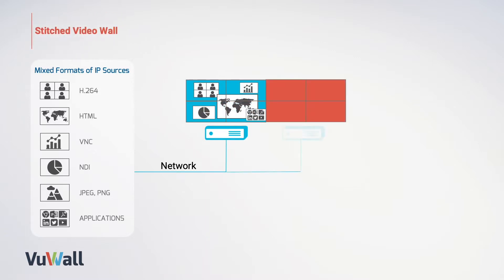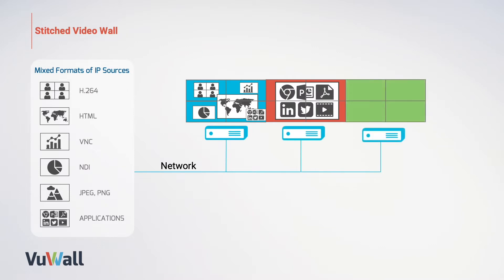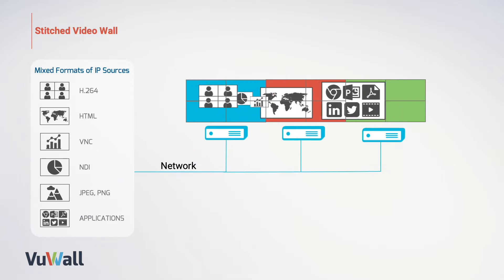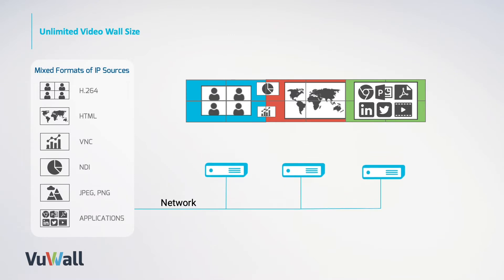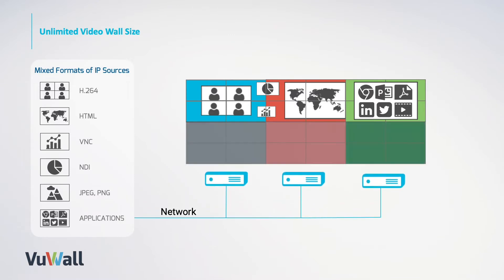For larger video walls, simply add more PAC nodes, increasing the video wall's processing power with every additional PAC. By stitching multiple PAC units together, we create one logical surface that can mix content across the entire video wall. There is virtually no limit to the size of the video wall that you can create.